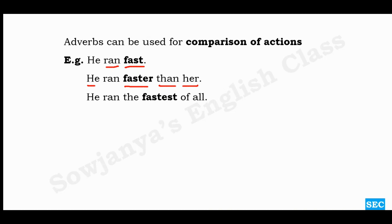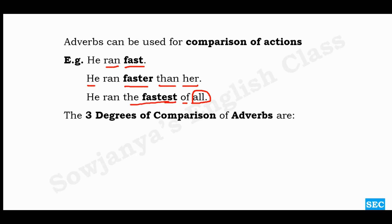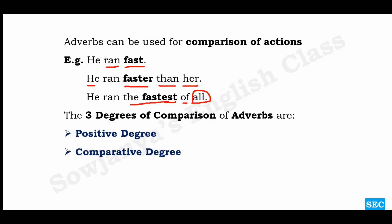'He ran the fastest of all' — this action is being compared with more than one. Here we have used the superlative. There are three degrees of comparison of adverbs: positive degree, comparative degree, and superlative degree.